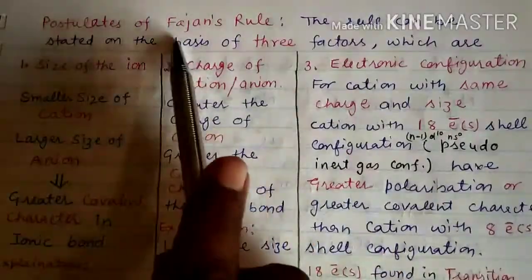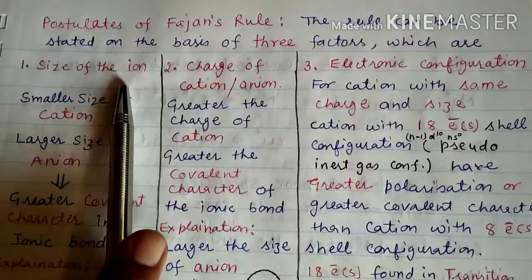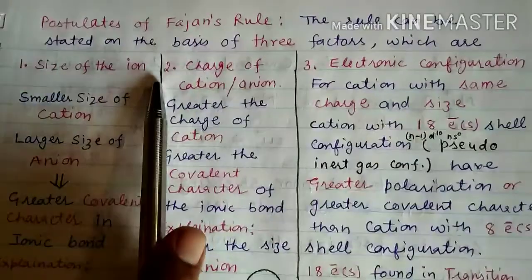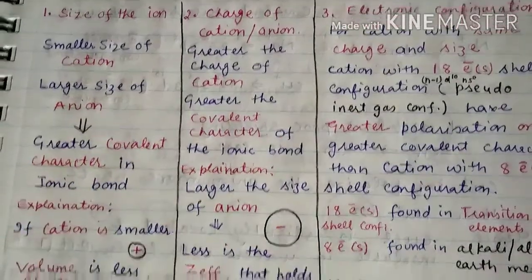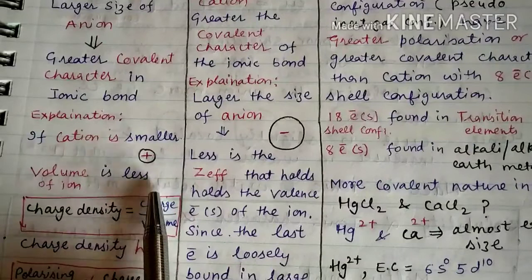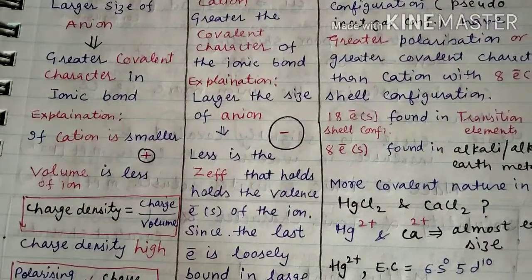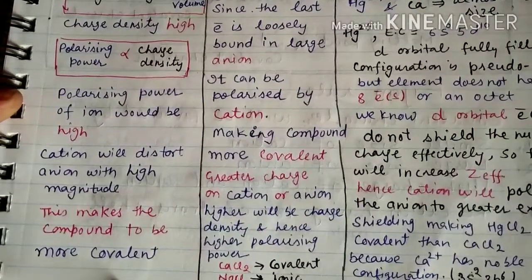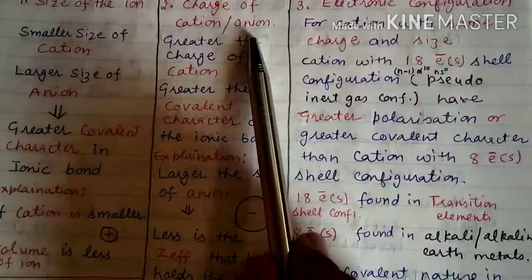Fajan's Rule can be stated on the basis of three factors: size of the ion, charge of the cation or anion, and electronic configuration. Regarding size: smaller the size of the cation and larger the size of the anion, greater the covalent character in the ionic bond. If the size of the cation is small, the volume is less, so charge density is high, polarizing power is high, and ultimately the compound will be more covalent.